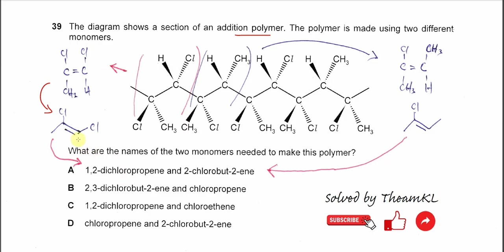For this monomer: first carbon, second carbon, third carbon. On the first carbon and the second carbon, there are two chlorines. So it's 1,2-dichloropropene.